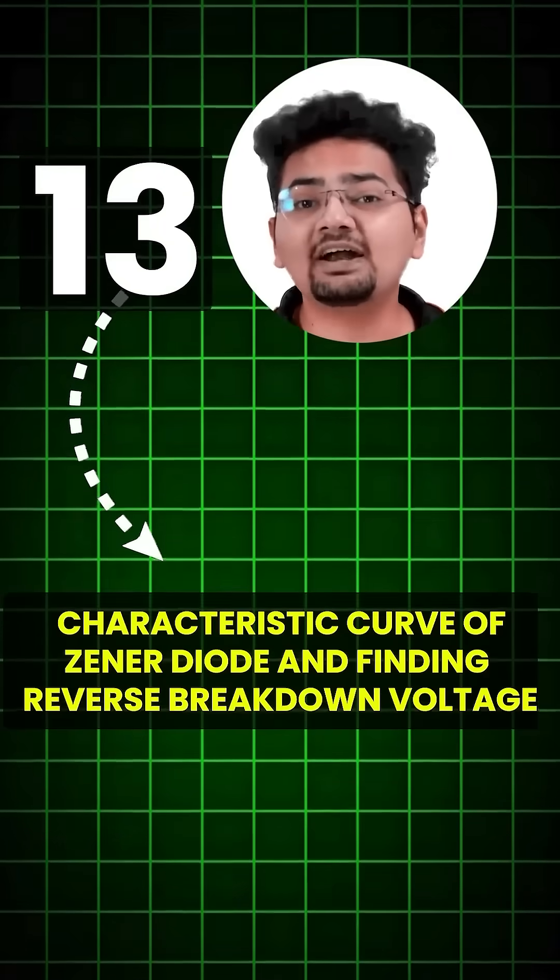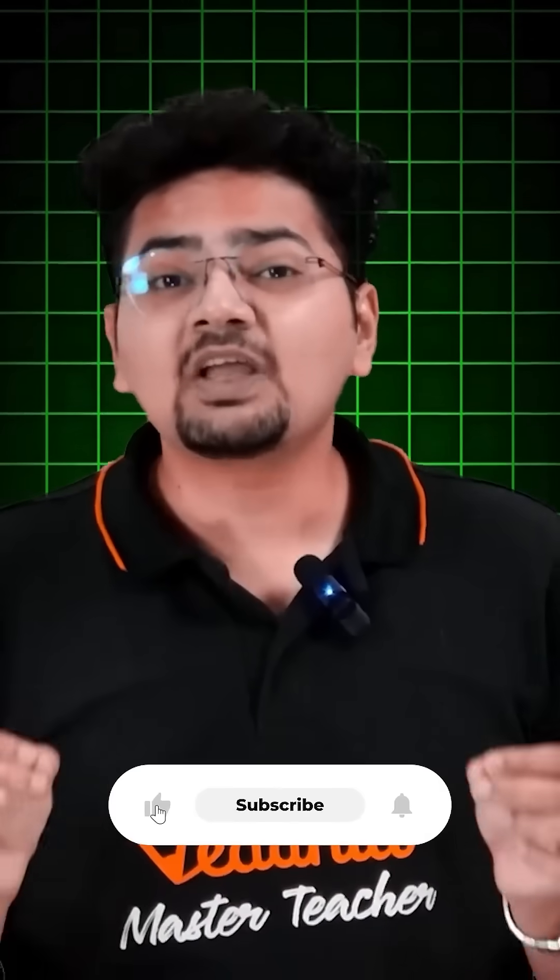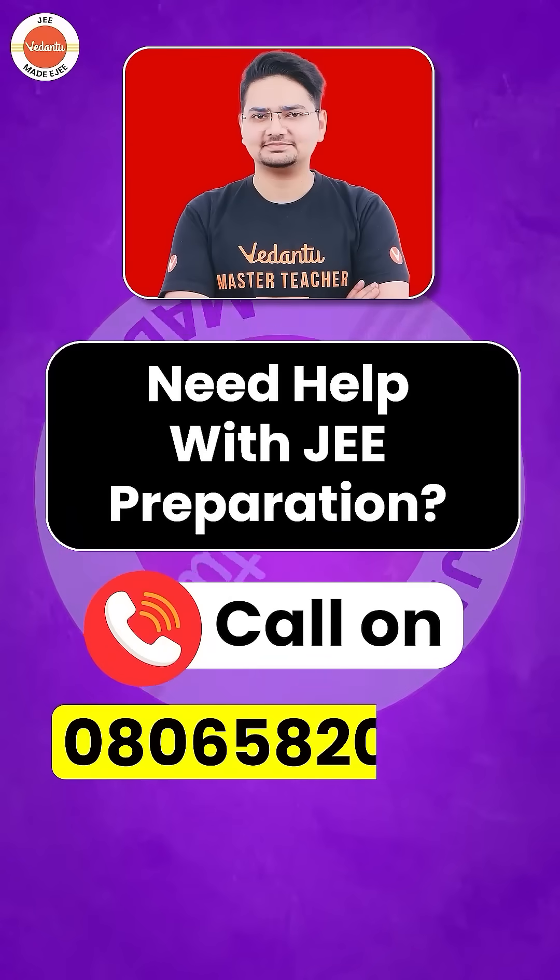And last but not the least, characteristic curve of Zener diode finding reverse breakdown voltage. These are the 13 experiments which if you do then you will easily be able to score this many marks. And how many of these experiments do you know? Tell me that number in the comment box.